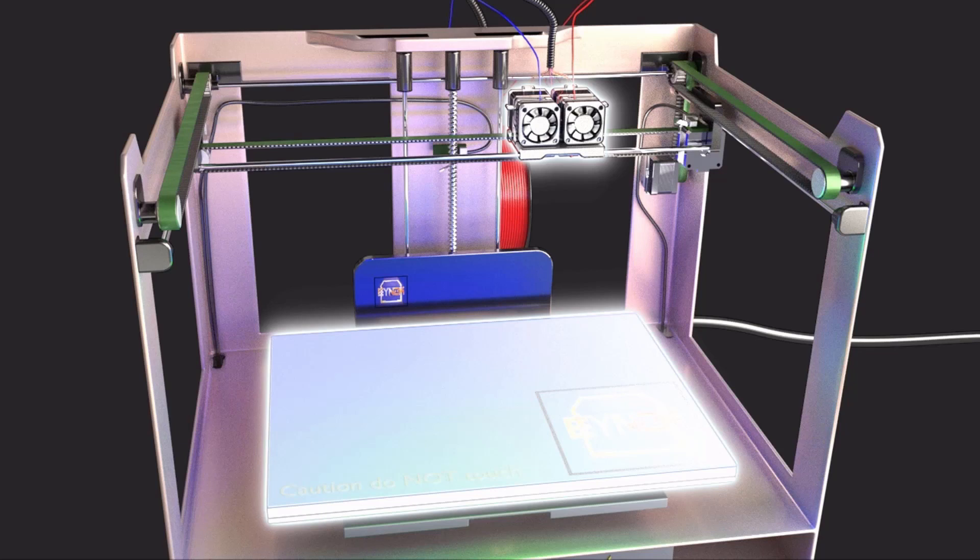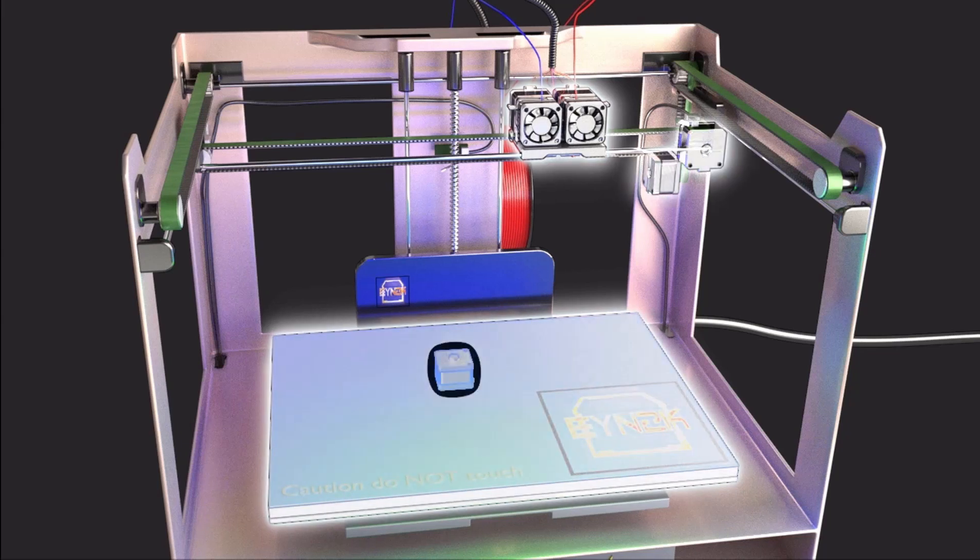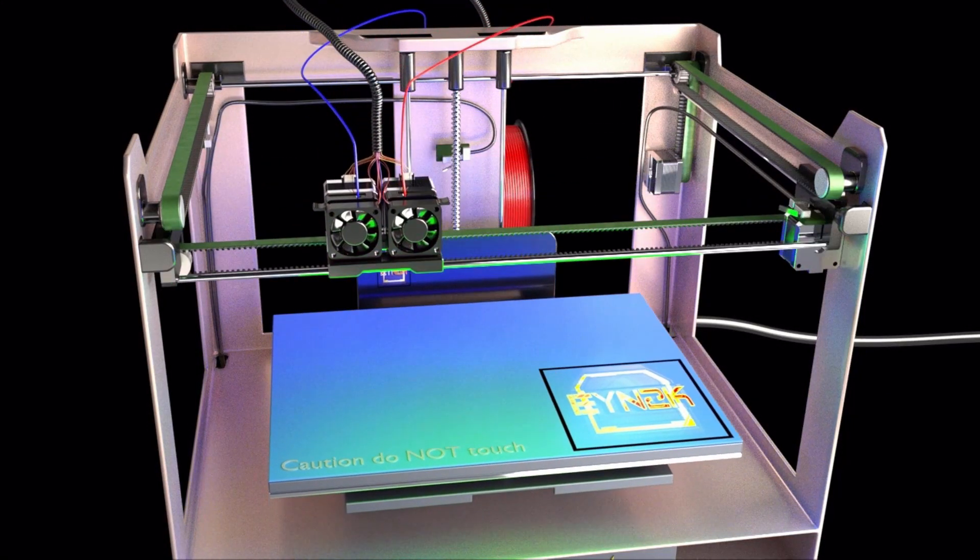Once the slicer program has worked its magic, the data is then sent to the printer for the final stage. From here, the 3D printer itself takes over. It will begin to print out the model according to the specific instructions of the slicer program using different methods, depending on the type of printer used.